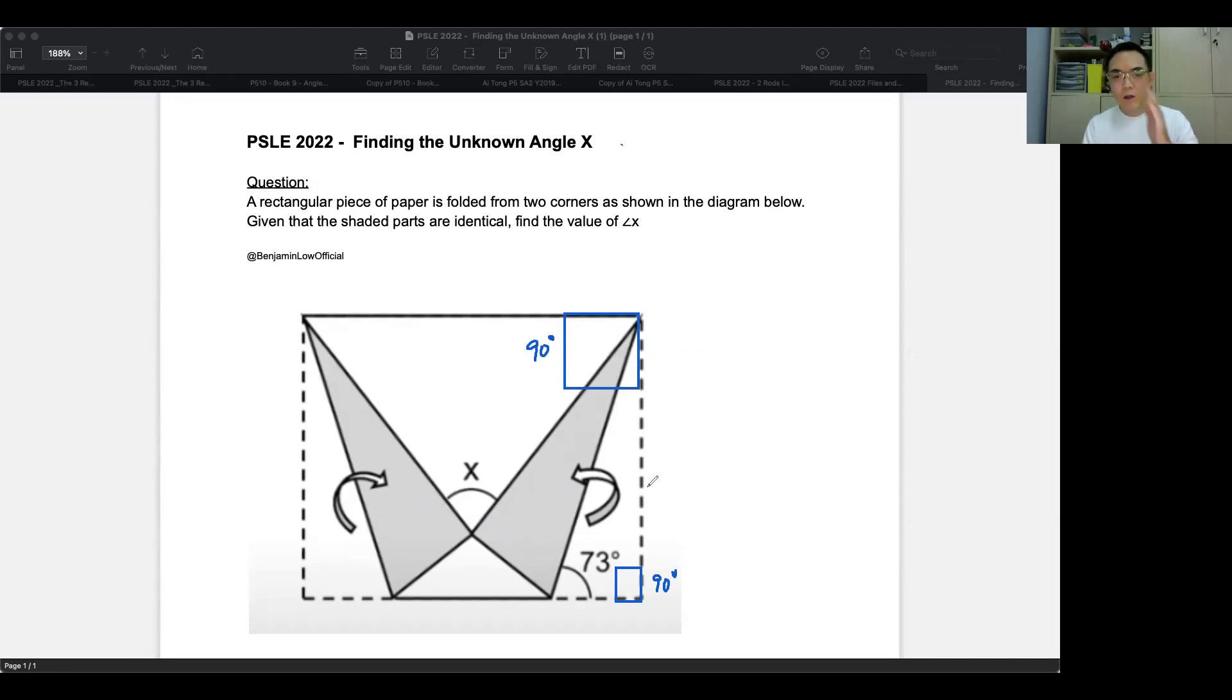Now, the next thing you need to know is that when you fold a piece of paper, the two angles over here are identical. Likewise, the two angles over here are also identical.